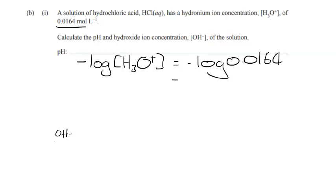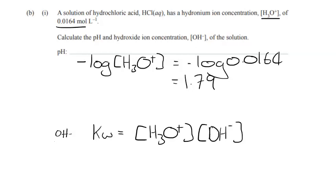And that would give us an answer of 1.79. For the next one, the hydroxide ions, we can use this again. And this is where we go. KW equals the product of the hydronium ions and the hydroxide ions. So we need to rearrange this equation for it to equal OH-. So we divide both sides by H3O+, or the concentration of H3O+.